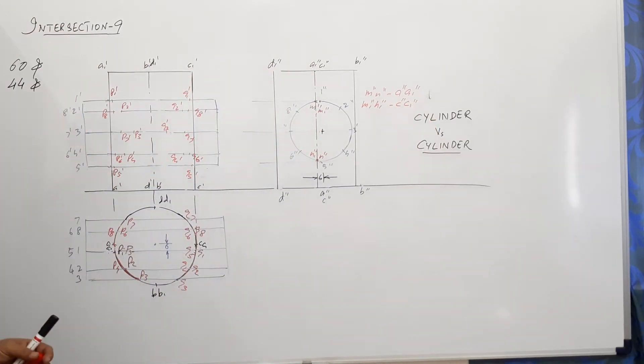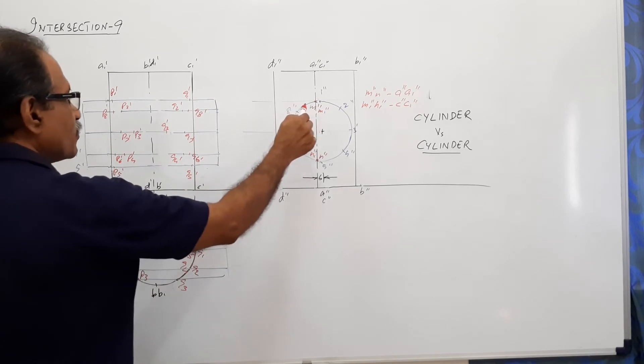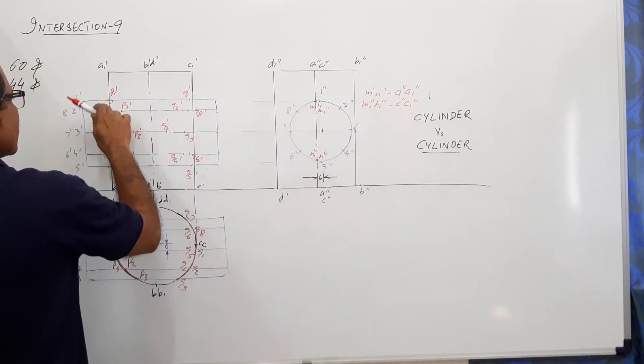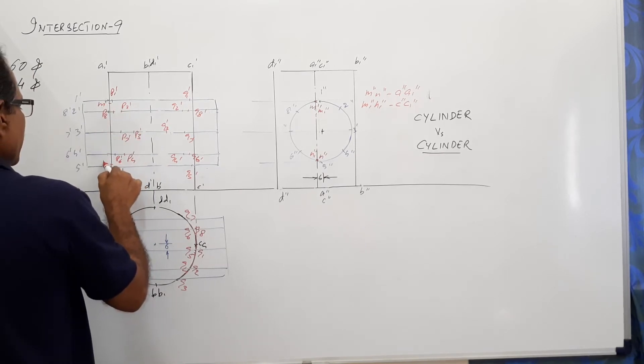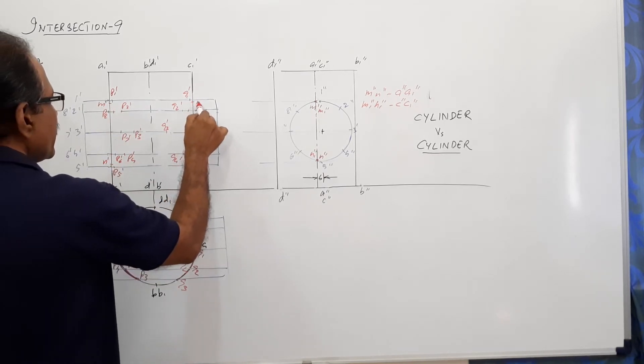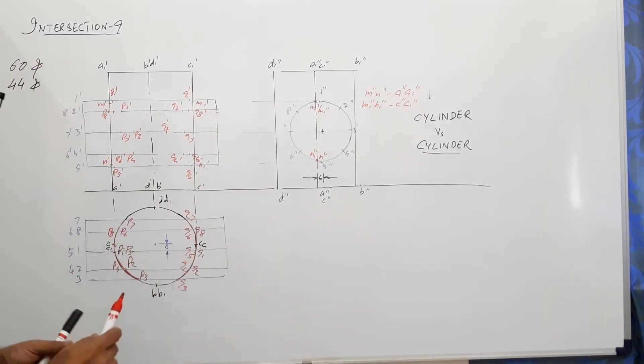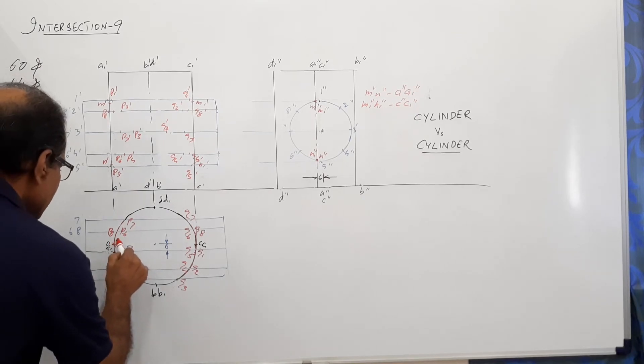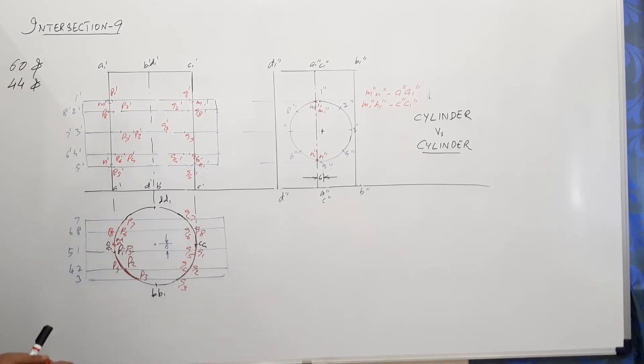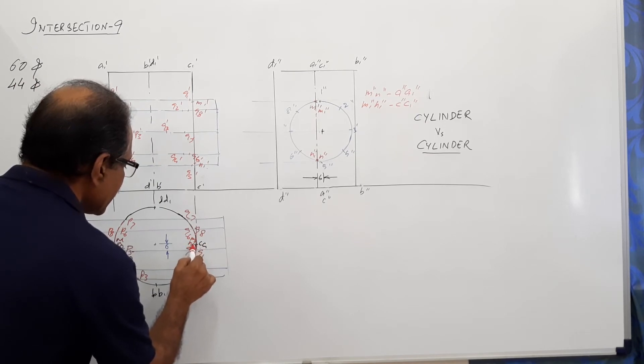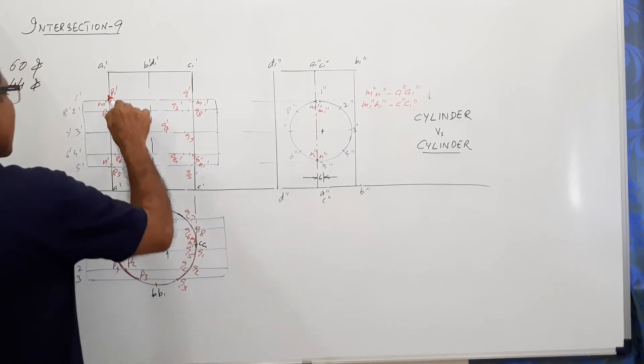Draw horizontal lines through them. When you draw a horizontal line, you get a point here. This will be M dash, this will be N dash, this will be M one dash and this will be N one dash. Now A itself is M and N, this is M one, N one.